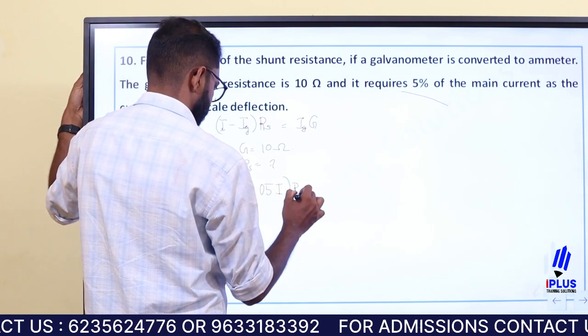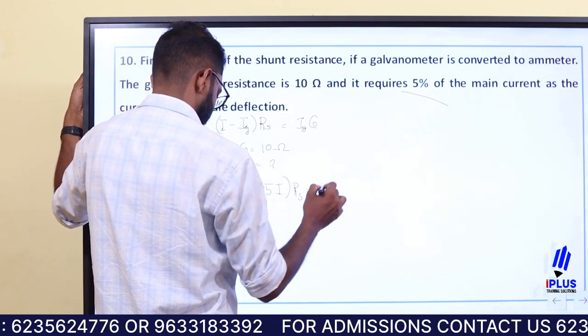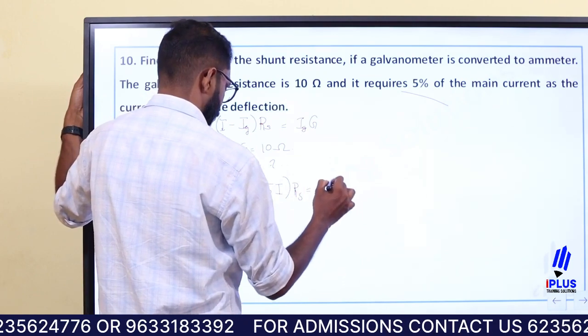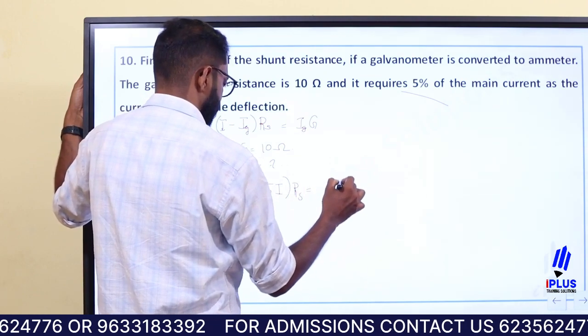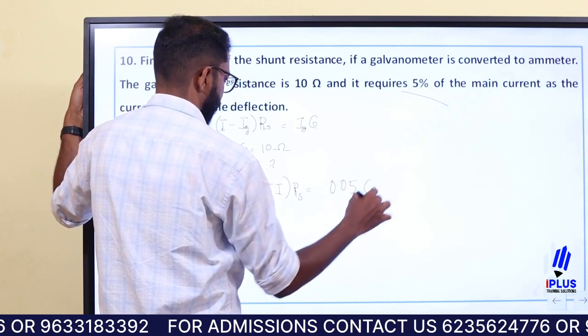We will find the value of Rs. The expression becomes Rs equal to 0.05 into g.